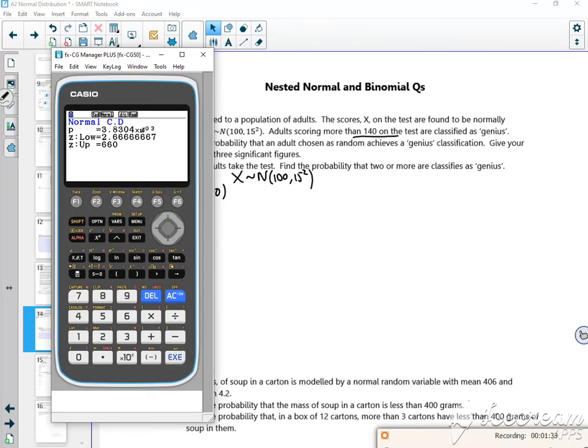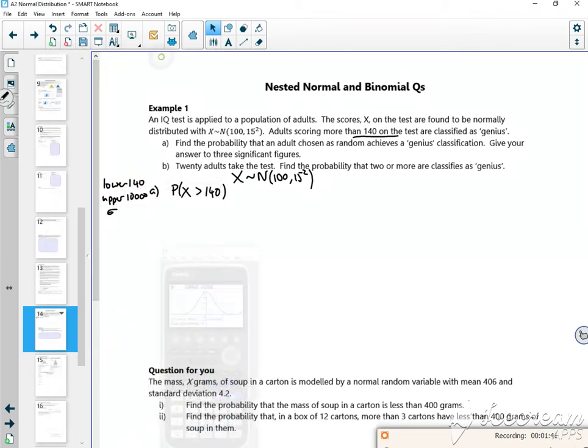Oops, couldn't press it. It gives you the top end really high up with a really small probability. So sigma is 15, mu is 100, and that's 0.00383. So that bit's okay, that's fine.